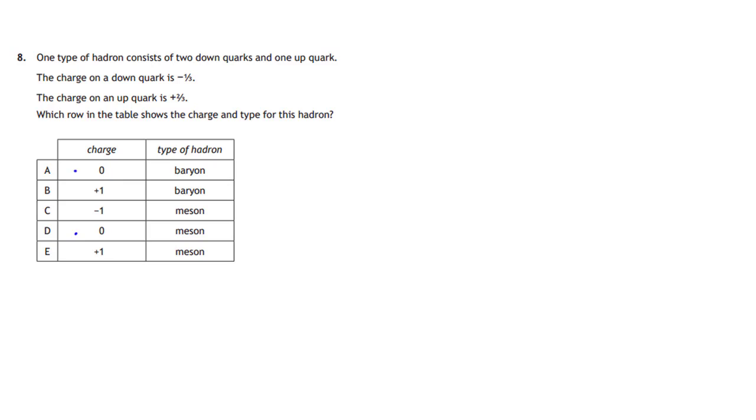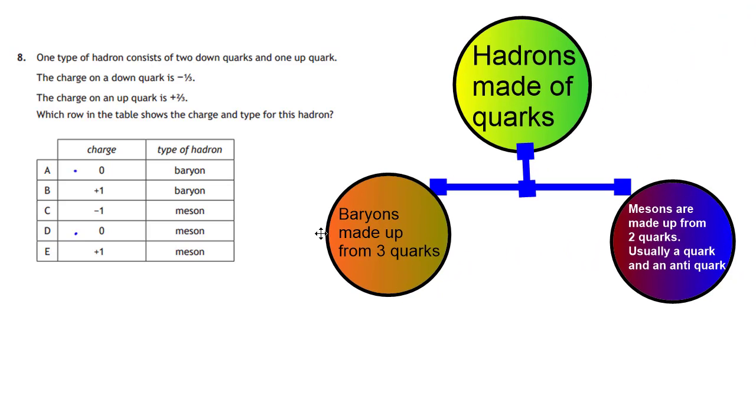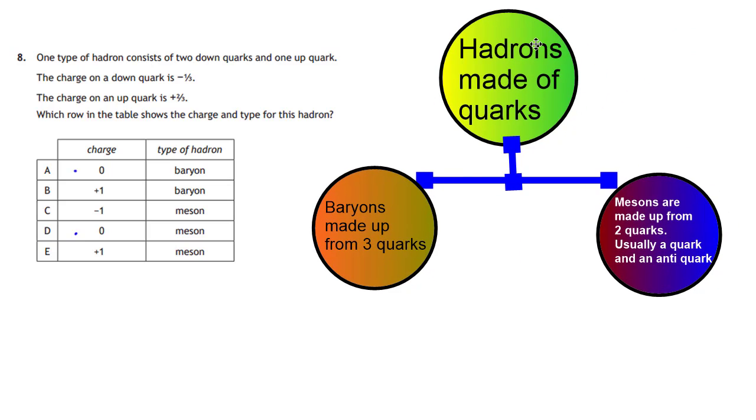Question eight is a standard question. One type of hadron consists of two down quarks and one up quark. And you have to find the charge on a down quark is minus a third. The charge on up quark is plus two thirds. And you have to give which is the combined charge and which type of hadron we're talking about. Now here's the chart for this. You have to learn this basic fact here. Hadrons are particles made up of quarks. And they fall into two families. You have baryons, which are made up of three quarks. And you have mesons, which are made of two quarks. And that's usually a quark and an antiquark. So a hadron made up of two different types of families. And you can learn those facts there.